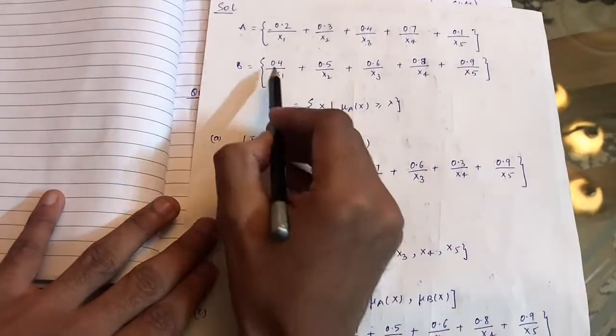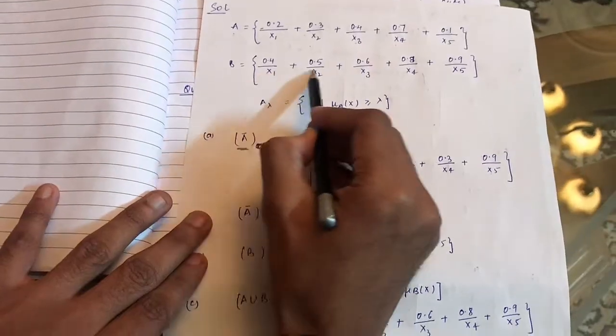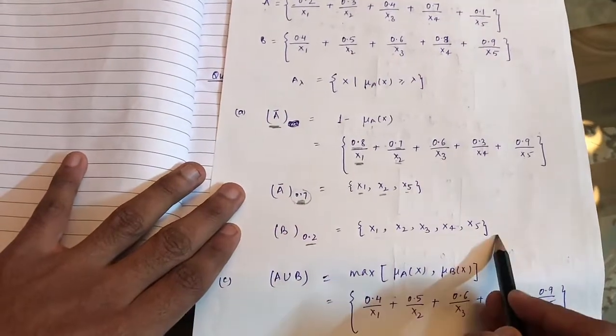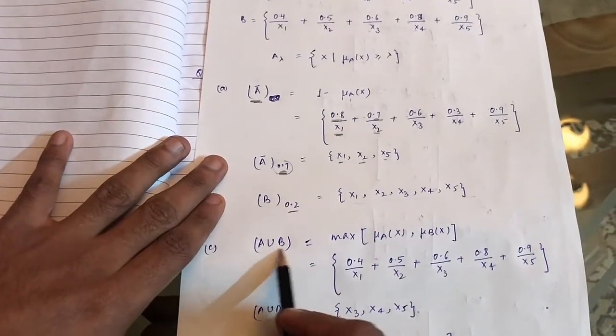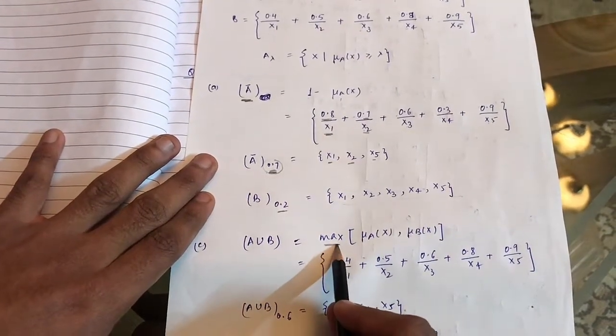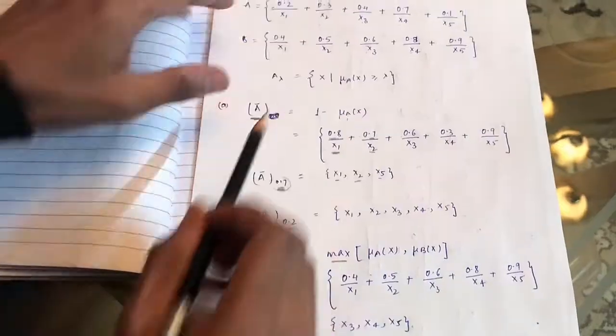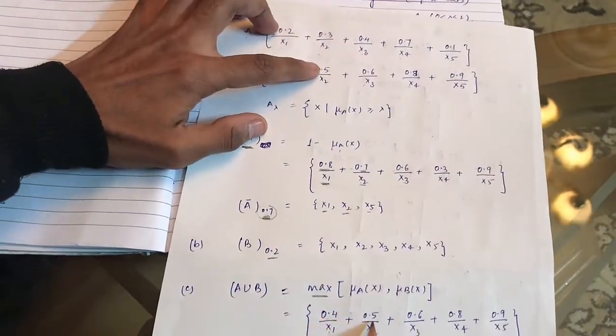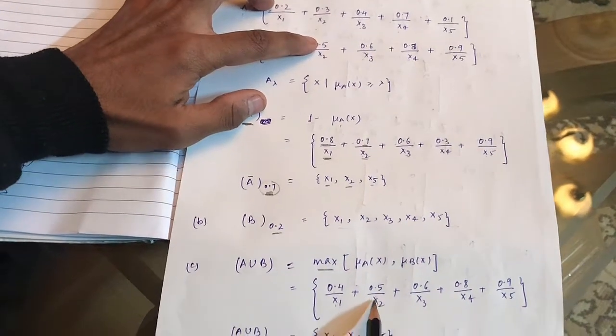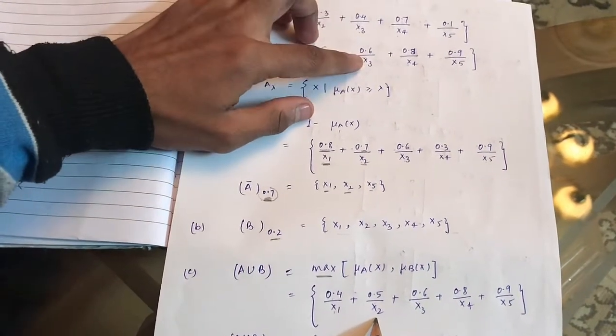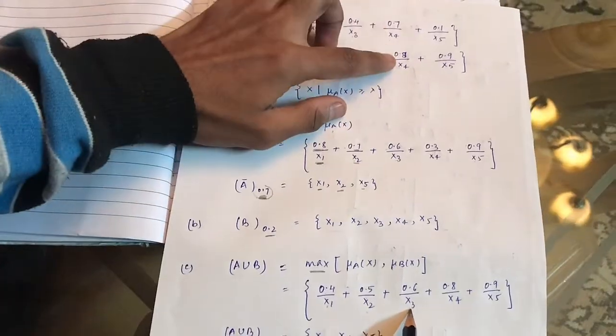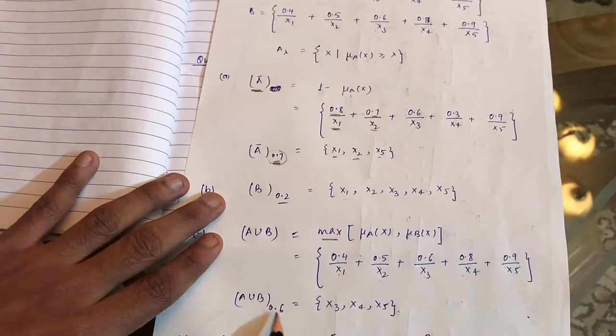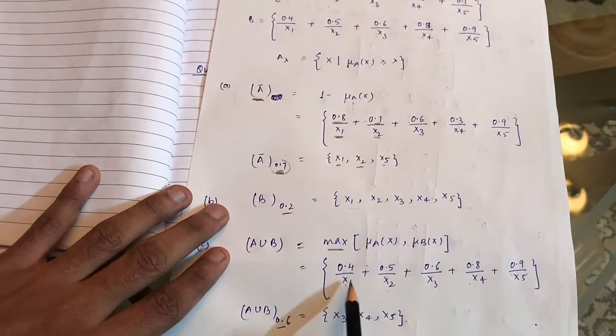Similarly for B you can find out easily. Since all of the values of B are greater than 0.2, x1, x2, x3, x4, x5 all will come in this set. For A union B, we take the maximum of A and B. So 0.2 and 0.4, 0.4/x1; 0.3 and 0.5, 0.5 is maximum so 0.5/x2; 0.4 and 0.6, 0.6/x3; 0.7 and 0.8, 0.8/x4; 0.1 and 0.9, 0.9/x5.